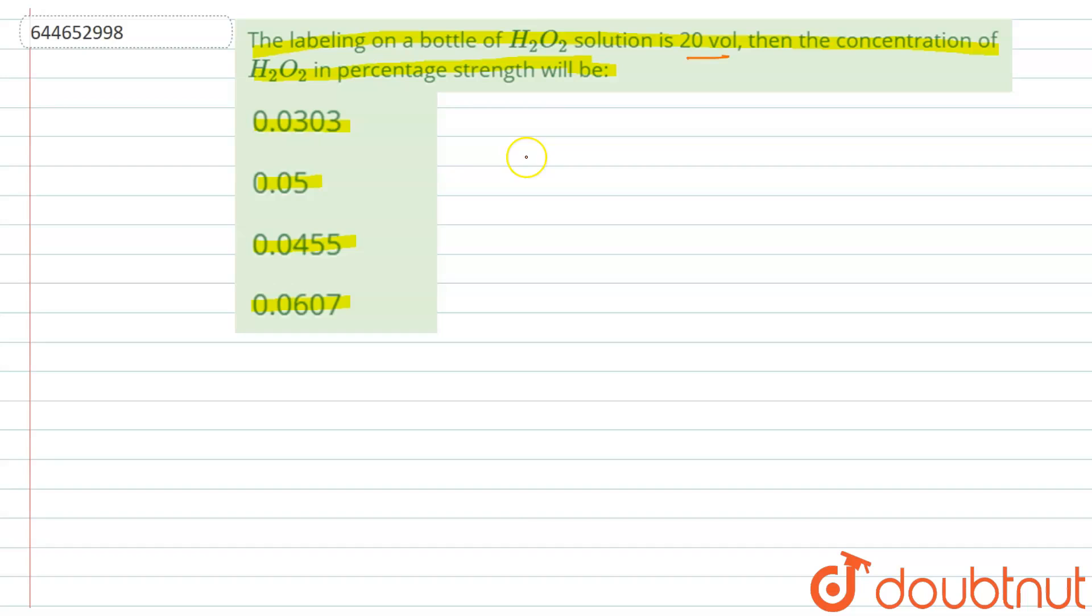So the equation will be like this: 2H2O2, that is hydrogen peroxide, will give 2H2O plus O2. Now if we see that the coefficient, the stoichiometric coefficient of H2O2 is 2, and of H2O is also 2, and oxygen is 1 here.